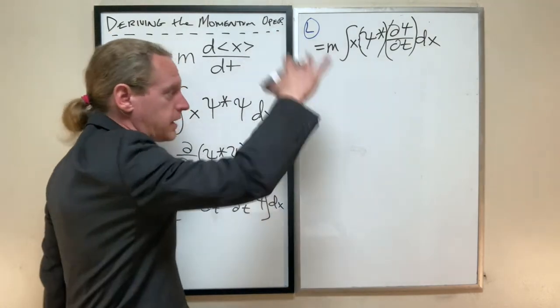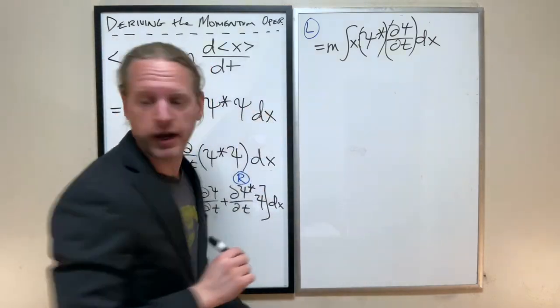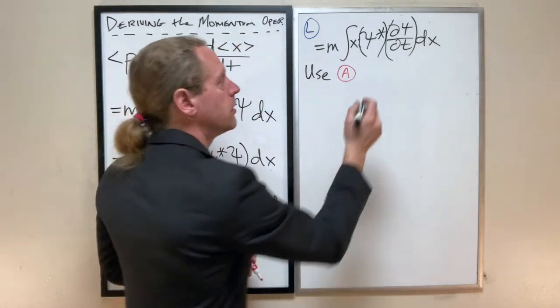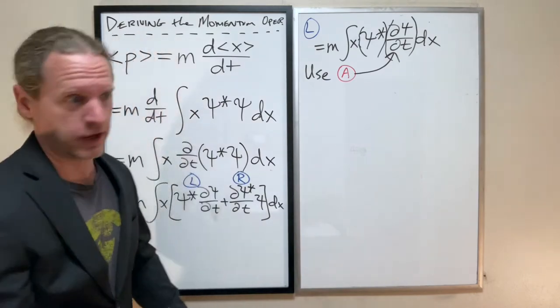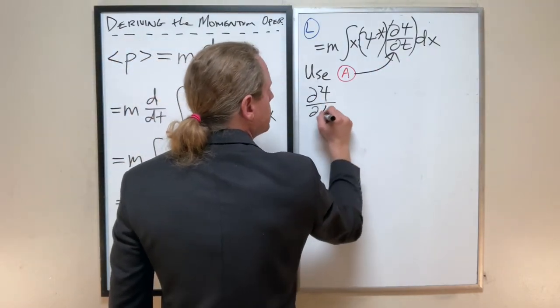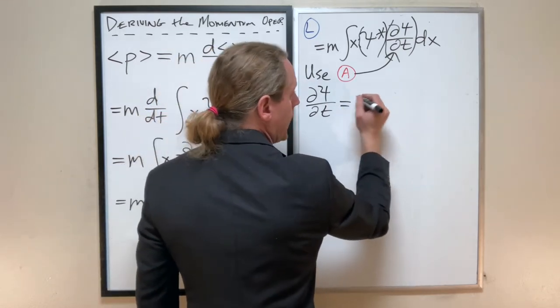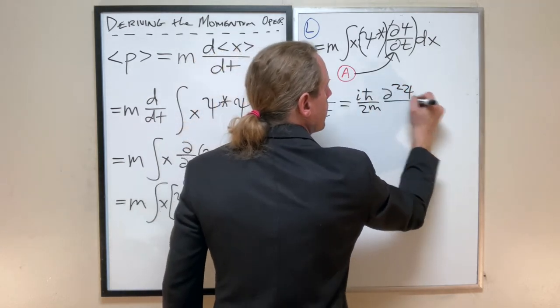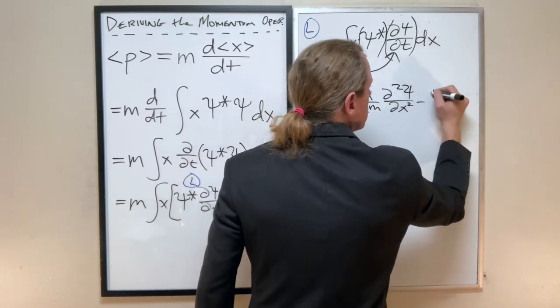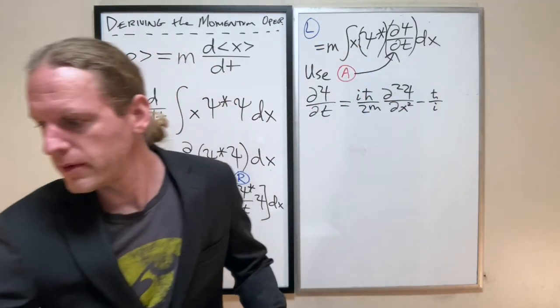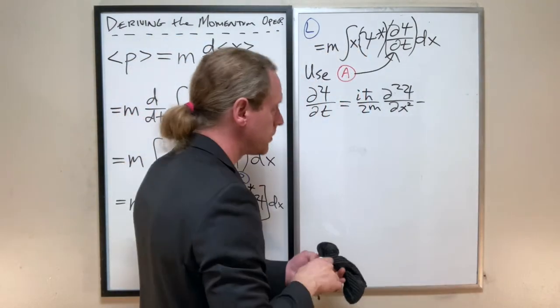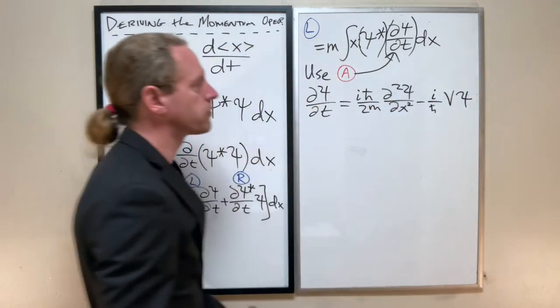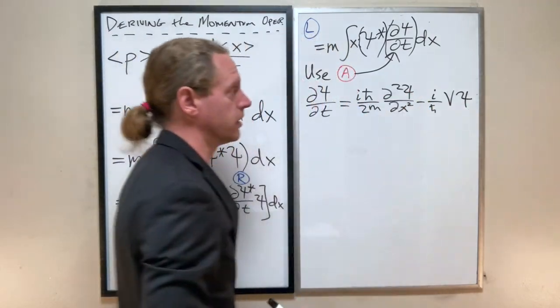At this point, remember those key equations we laid out. I'm going to employ equation A right here. As a reminder, dPsi/dt equals i ℏ over 2M times d²Psi/dx² minus i over ℏ times V Psi. You'll see why I'm not going to have to worry about that shortly.